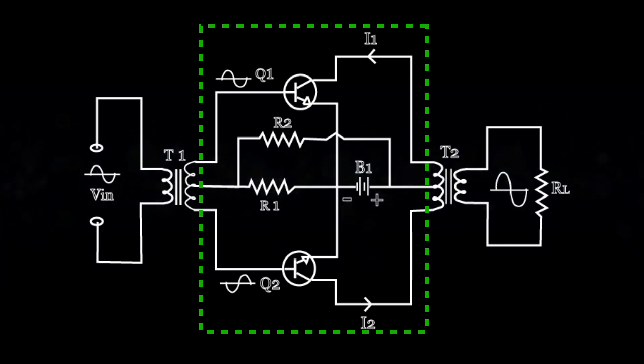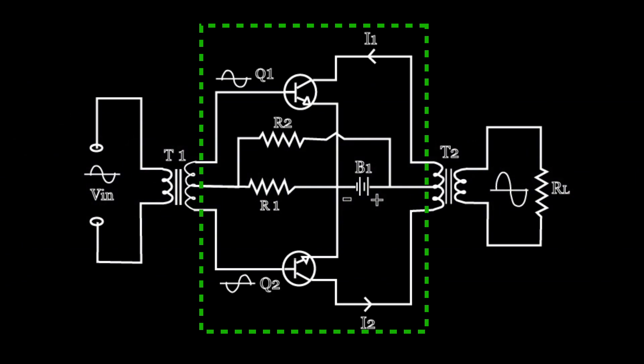As a result, an amplified version of the original input signal is induced in the T2 secondary. So current through the T2 secondary is the difference between the two collector currents.